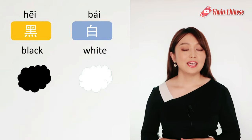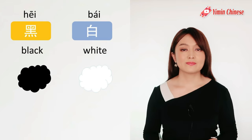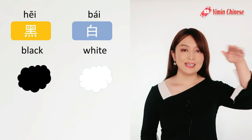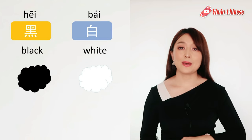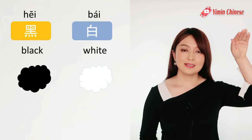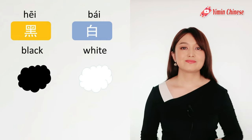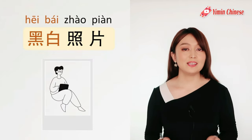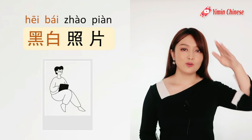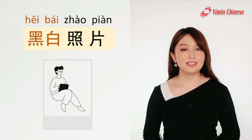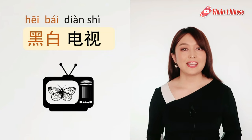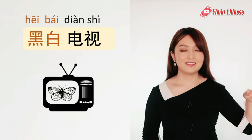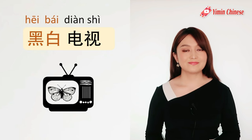好, 下一组, next pair: 黑和白, black and white. 黑, black: 黑. And 白, white, is a rising tone: 白. For example, black and white picture is 黑白照片, and the black and white TV is 黑白电视.